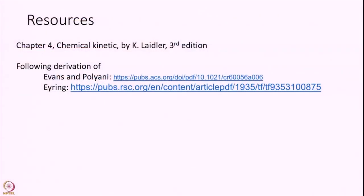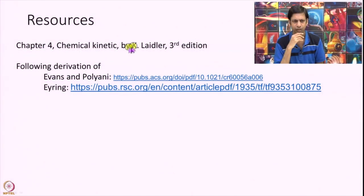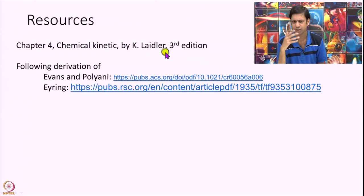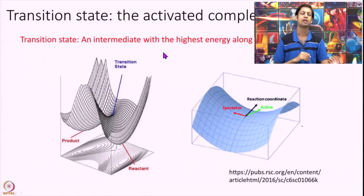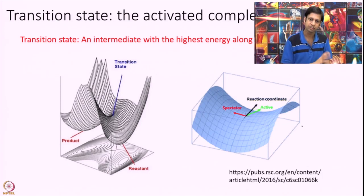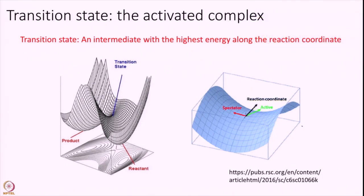What we are following is the book by Laidler, chapter 4 of the third edition. In a different edition you will find this in a different chapter number. The transition state is an activated complex in the language of Arrhenius — an intermediate with the highest energy along the reaction coordinate.